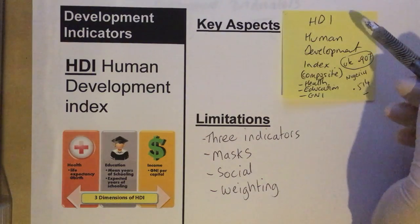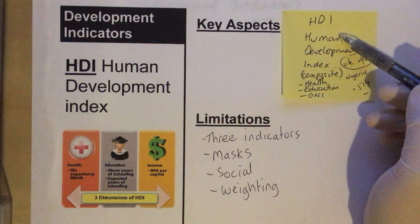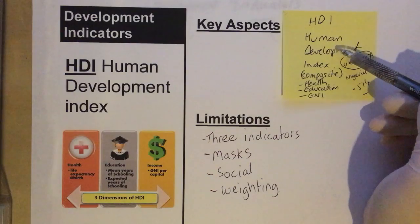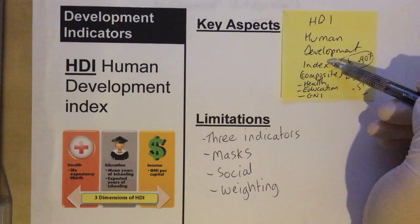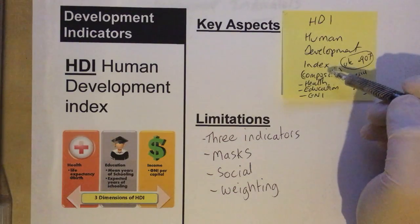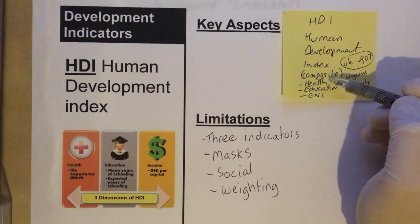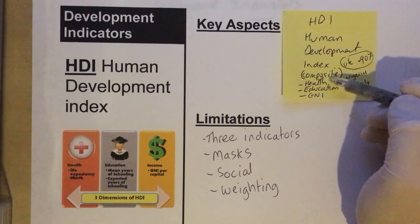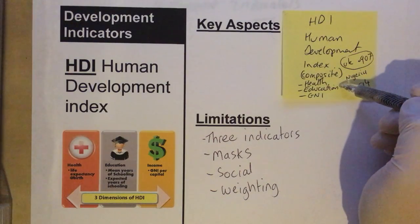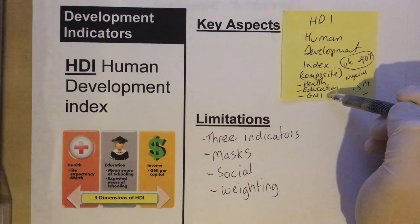Previously we've learned that HDI stands for the Human Development Index. It is a composite of three other development indicators: healthcare, education, and income.